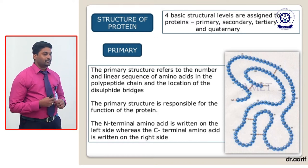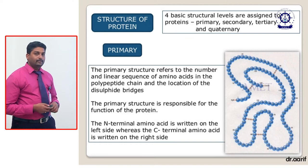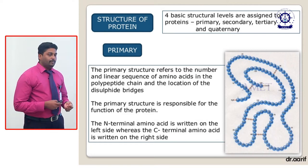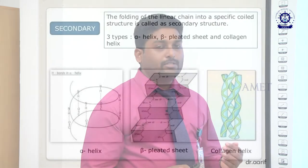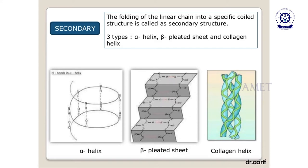In the primary structure, the N-terminal amino acid is written on the left side whereas the C-terminal amino acid is present on the right side. The secondary structure is the folding of the linear chain into a specific coil structure. There are three types: alpha helix, beta pleated sheets and collagen helix. Alpha helices have a helical structure present in singular form. Beta pleated sheets appear in a ladder shape in a pleated form. The collagen helix is a mixture of content.